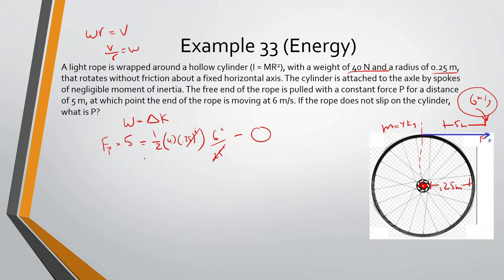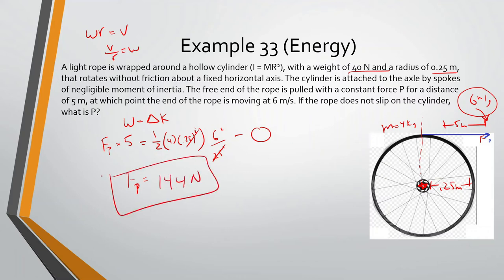Solving: 6² × 4 × 0.5 ÷ 5 = 14.4 newtons. So the pulling force P is 14.4 newtons.